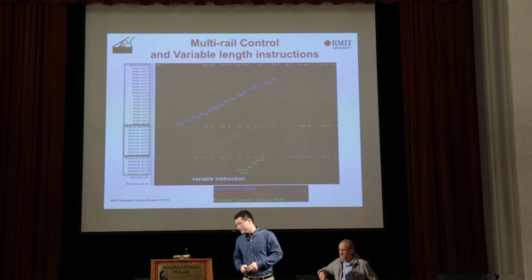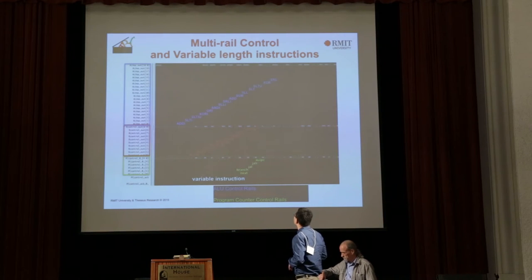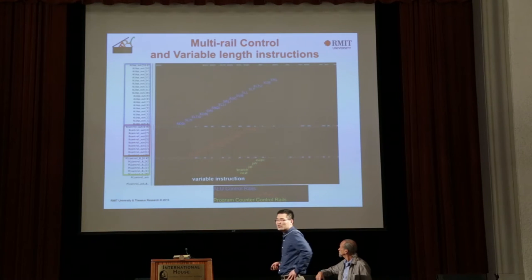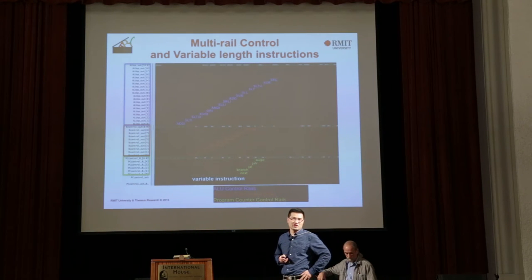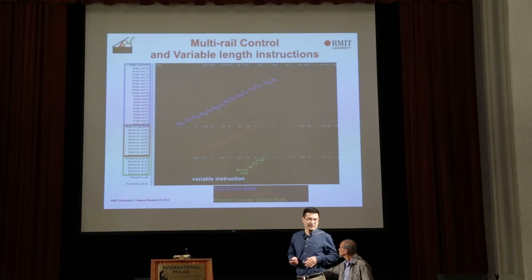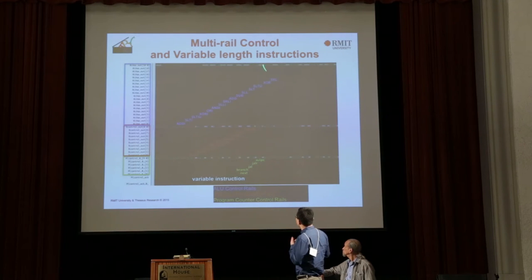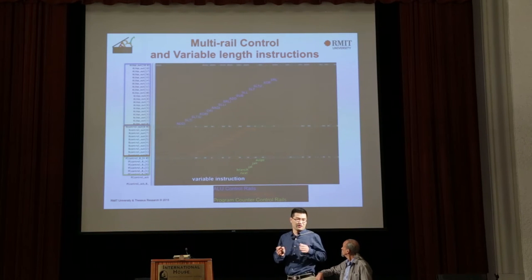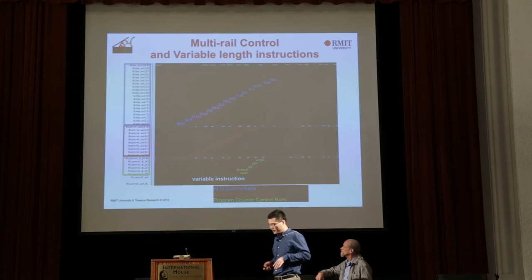This is the design simulation showing multi-rail control and variable-length instructions. The first block shows RISC methodology unit control rails, the second block is register file control rails, and the third block is program control rails — all control signals generated from the instruction decoder. Each instruction has a different length depending on its input variables. Even here you can see that all the instructions relate to the RISC methodology; for example, ADDI instructions can have different instruction lengths depending on input data.